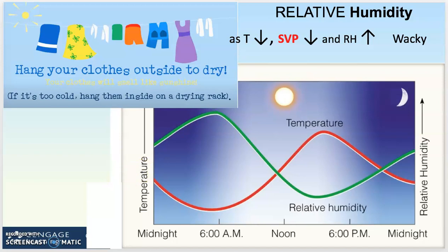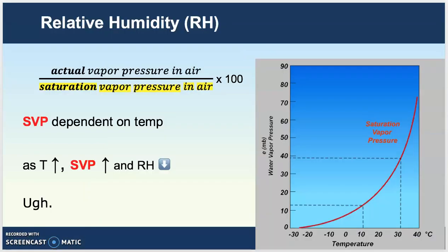Relative humidity is a crazy calculation. To summarize: relative humidity is actual vapor pressure over saturation vapor pressure, and it's dependent on temperature. Saturation vapor pressure goes up as temperature goes up, but because it's in the denominator, that makes the quotient — relative humidity — go down. It's a crazy calculation. We're going to move on to a much easier measure that real meteorologists use: dew point, which comes next.